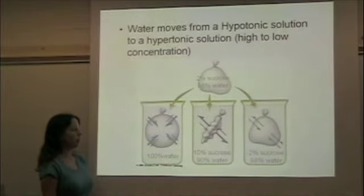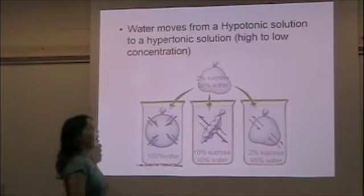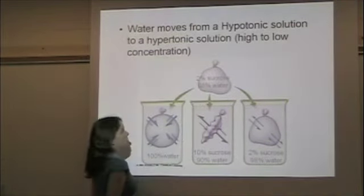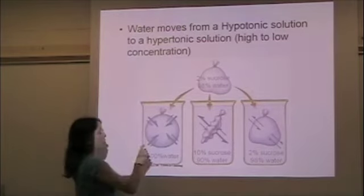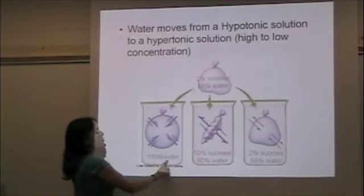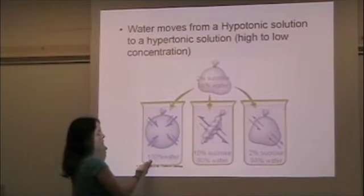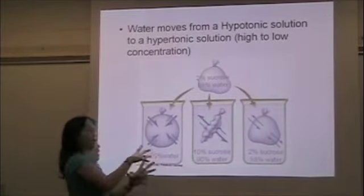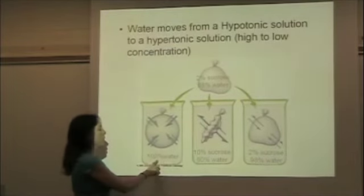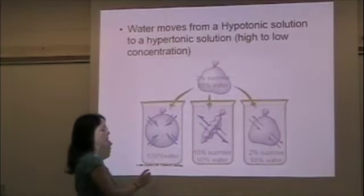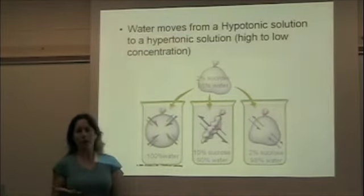We're going to go through a scenario with three different options. We have a bag surrounded by a semi-permeable membrane. Inside the bag there's 98% water and 2% sucrose — a solution of sugar water. In the first experiment, we put that bag of sugar water into a beaker that's 100% water. There's more water in the beaker compared to the bag, so water goes from the high concentration in the beaker to the low concentration in the bag, and the bag is going to swell up. The beaker is hypotonic and the bag is hypertonic.